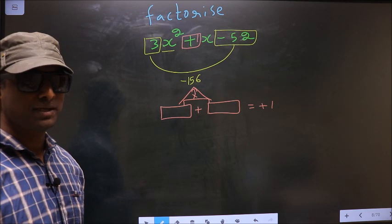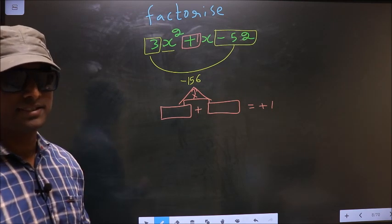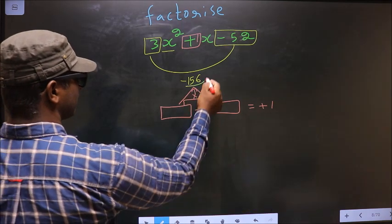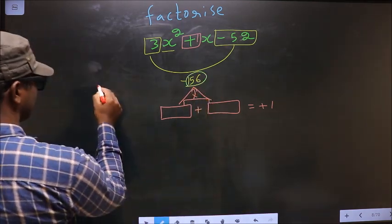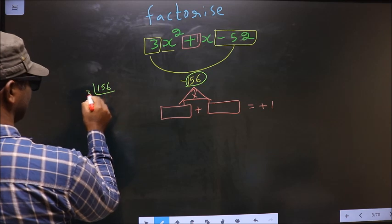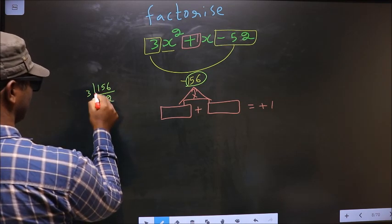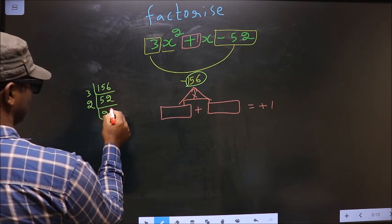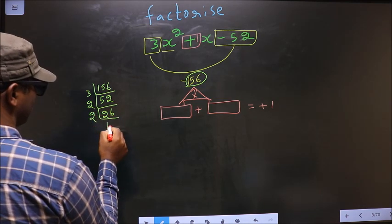Now to get those 2 numbers we should take LCM of 156. So I start with 3, 5, 2. Now 2. 2 2s, 2 6. Again 2. 1 and 3.